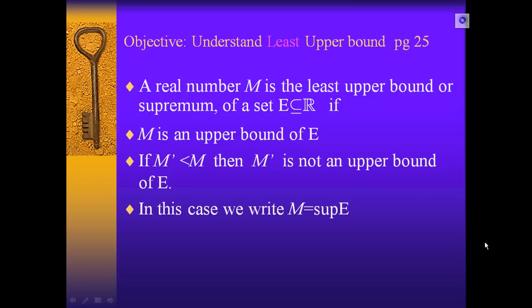A real number M is a least upper bound or supremum of a set E if M is an upper bound of E, and if M' less than M, then M' is not an upper bound of E. In this case, we write M is the supremum of E.